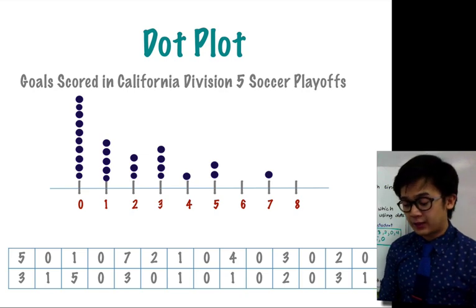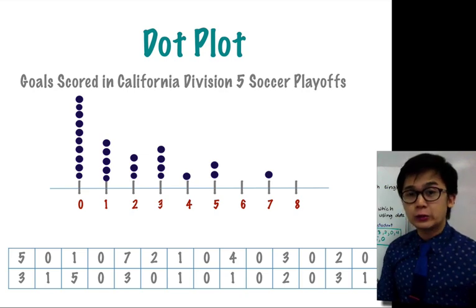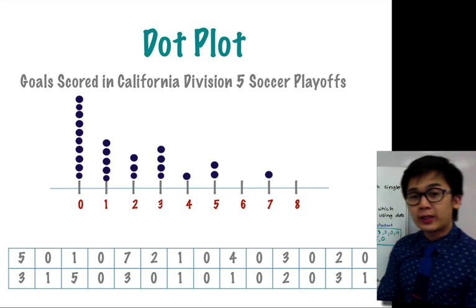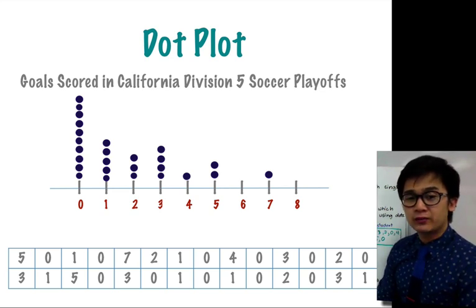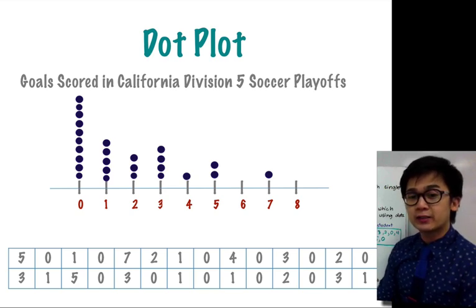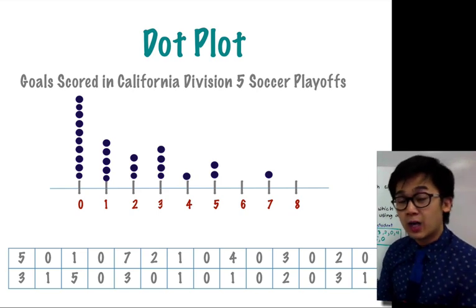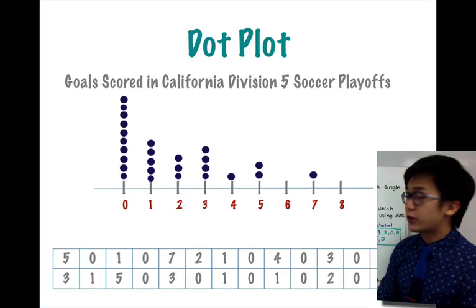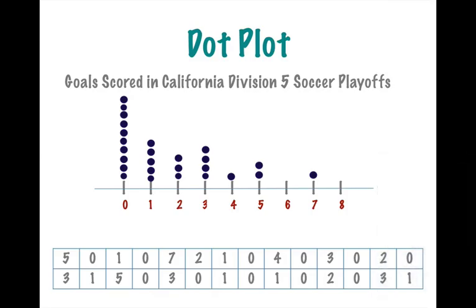So now that we have organized our ungrouped data into a dot plot we can pretty much tell that in this particular playoff there's a lot of no goals in this playoff. And that is how it is very important to use a graphical display in representing ungrouped data sets to be able to see the behavior of our numerical values. And that's how we construct a dot plot in using univariate data set. Let's do it. Thank you.